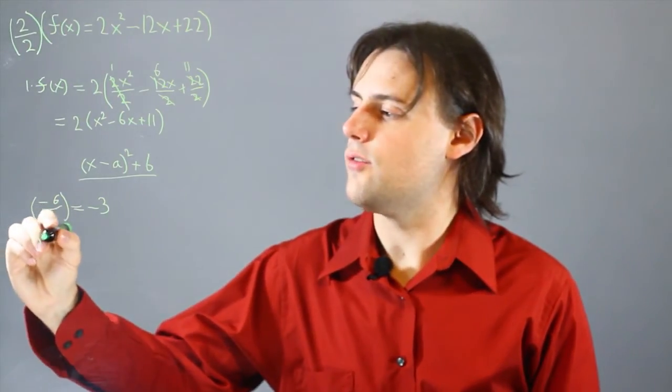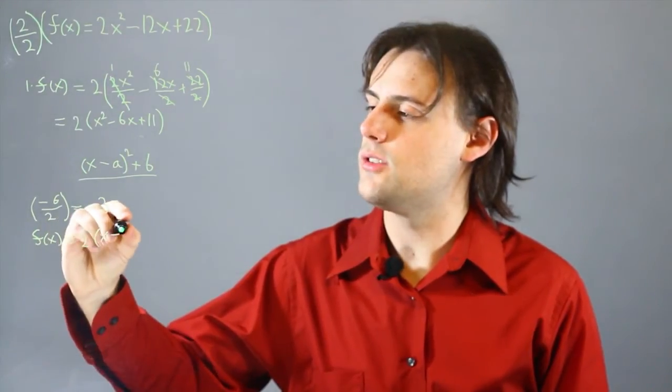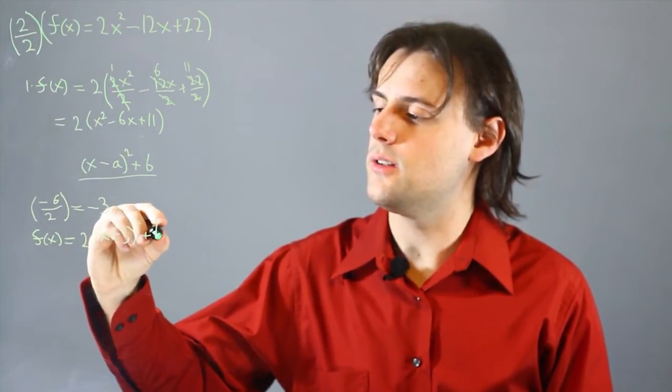So, we have f of x is equal to 2 times x minus 3 squared plus a constant b.